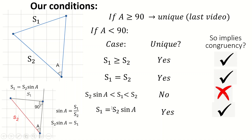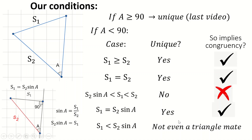This is really interesting because there's only one case in which SSA doesn't imply congruency. So when you're at GCSE and you learn that SSA isn't a rule, you're only learning that because of this single case. It's fine everywhere else — just this one case, and I guess the case where it's not even a triangle.